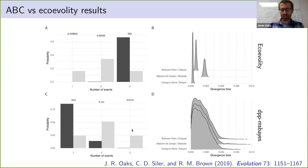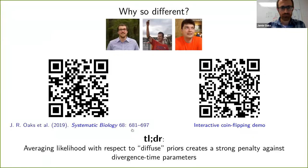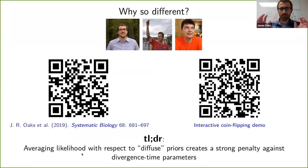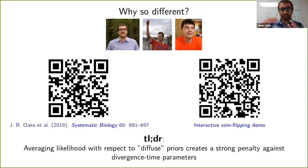That question motivated a PhD student in my lab, Kerry Cobb, along with Adam Lachey, Vladimir Minnan, and me to write a review paper interrogating that question. The long story short: it all comes down to those average likelihoods. In Bayesian model choice it's really the average likelihood that matters, and we're weighting that average by the divergence time priors. If those priors are really diffuse, it creates a really strong penalty against adding divergence time parameters to the model. Kerry also developed a really nice interactive web page to accompany the paper.